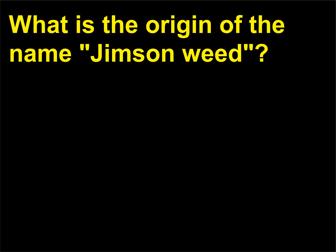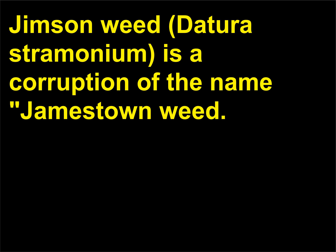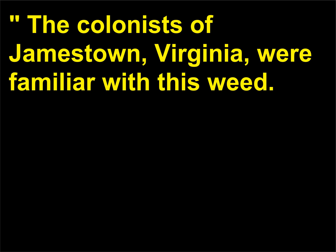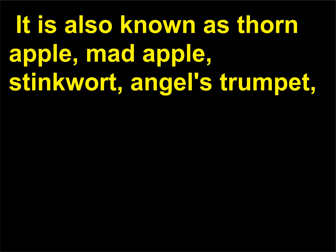What is the origin of the name Jimson weed? Jimson weed, Datura stramonium, is a corruption of the name Jamestown weed. The colonists of Jamestown, Virginia, were familiar with this weed. It is also known as thorn apple, mad apple, stinkwort, and angel's trumpet.